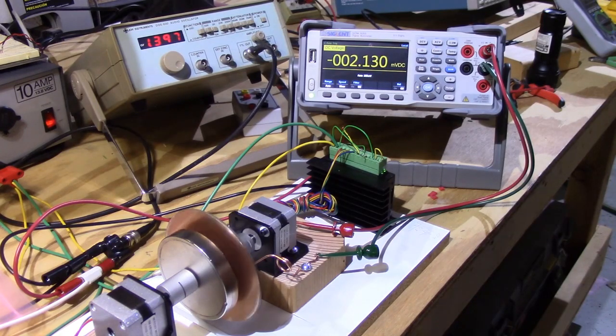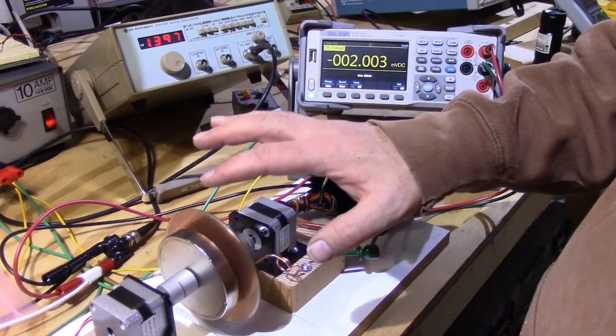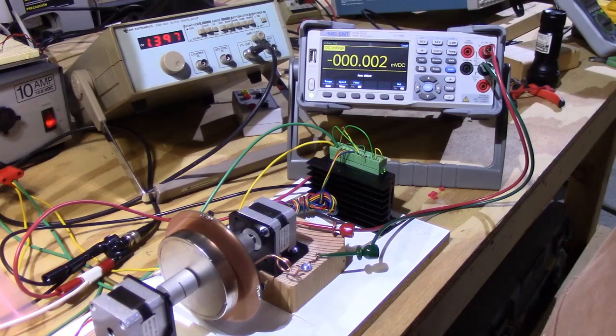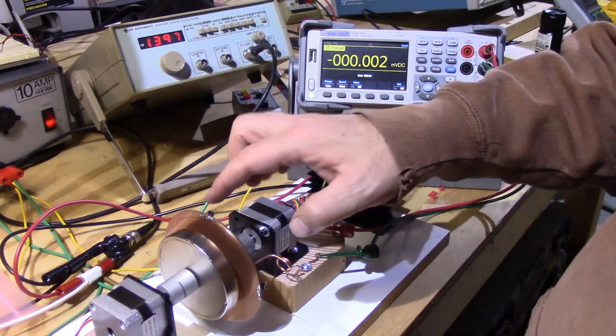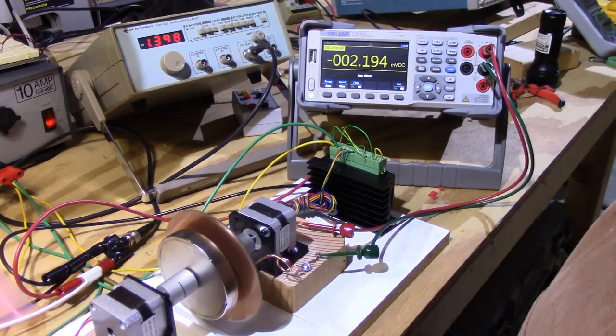You can see the signal in the background reading about two millivolts with just the disc spinning. Let's go to mode zero. Mode zero is with nothing spinning, and with nothing spinning we have zero reading. Mode one is just the disc spinning and we get about two millivolts.